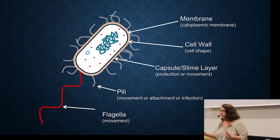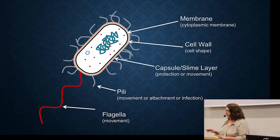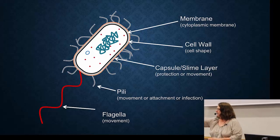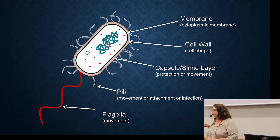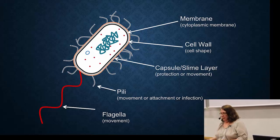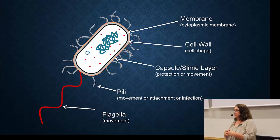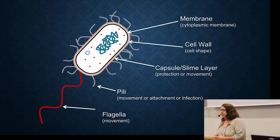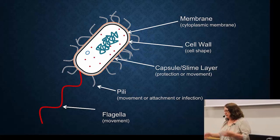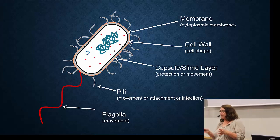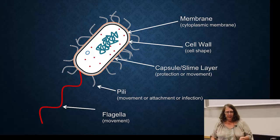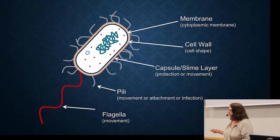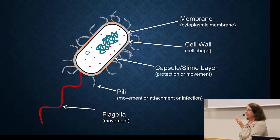Pili can be used for movement — some pili shoot out, grab a surface, and then pull the cell forward. They can also be used to attach to cells in your body. E. coli uses pili to attach to the urinary tract or the bladder to hold on so that it can cause infection. Pili are also used for gene transfer, which we'll discuss next week.